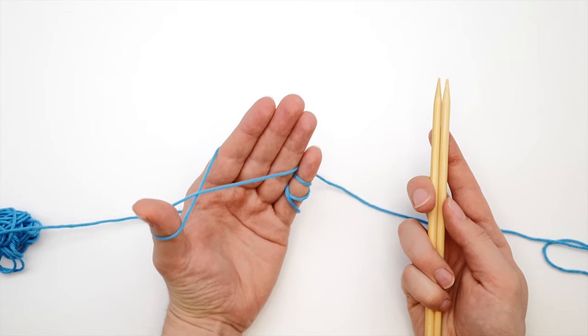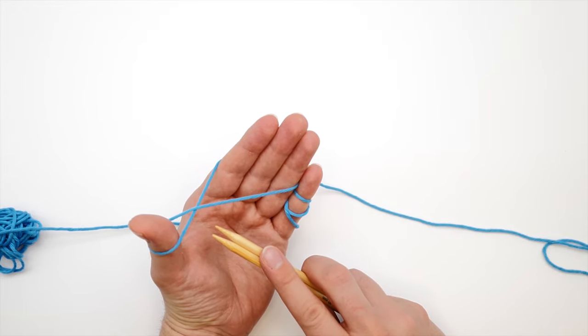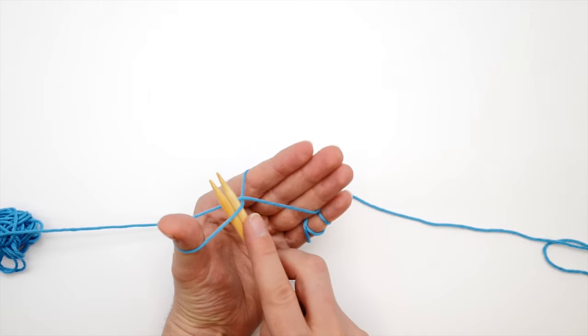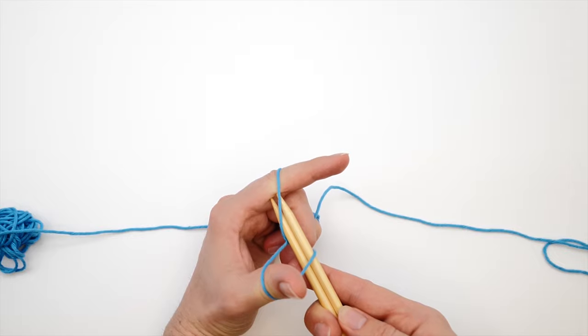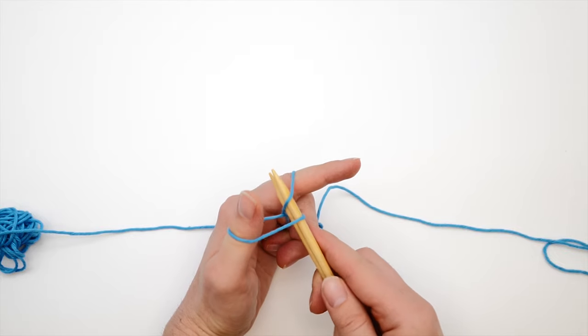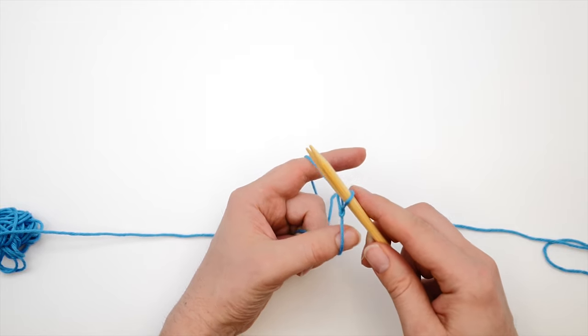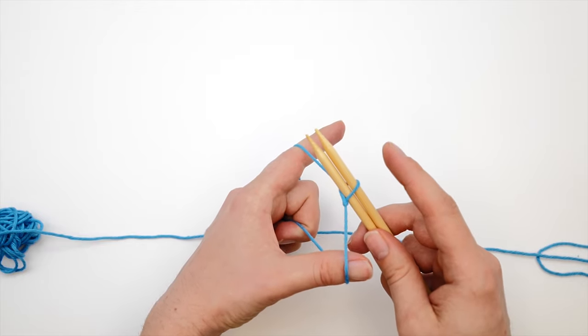The technique is always the same and it goes like this. Insert the needle into the loop around your thumb from below and pull it through. Let loose of the loop and tighten up. And this is your first stitch.